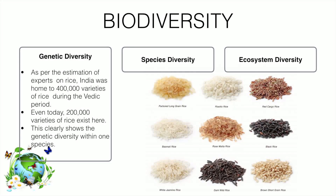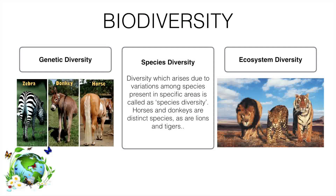Secondly, species diversity. If there is a variation among the species of one family of animals, that can be considered as species diversity. For example, zebra, donkey, and horses belong to the same family but are different species. Similarly, lion, tiger, and cheetah belong to the same family but are of different species, and that's why they are considered as species diversity.